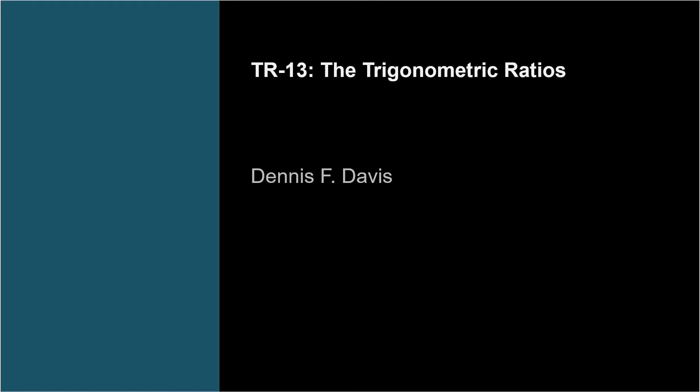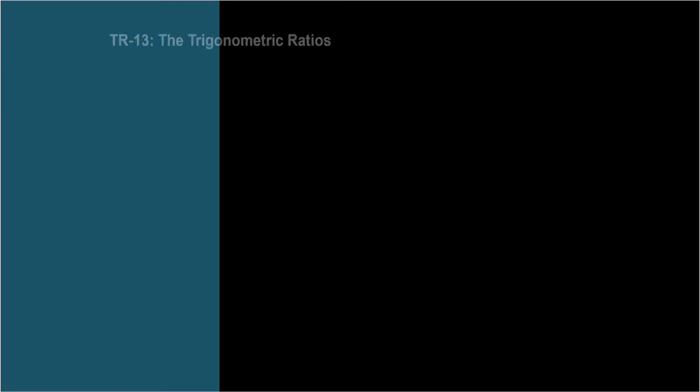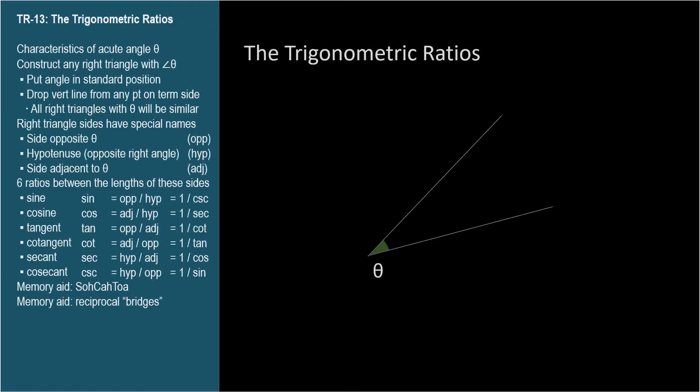In this video, we'll introduce the six trigonometric ratios. The trig ratios are characteristics of an acute angle theta. But to describe them, we need to imagine a right triangle that has theta as one of its angles.